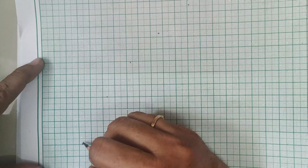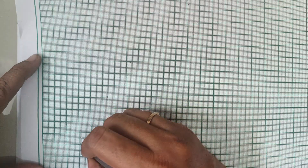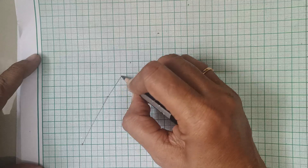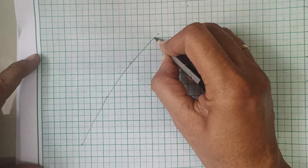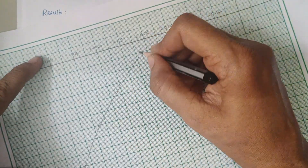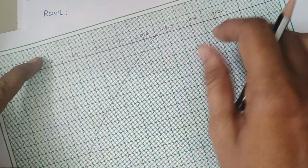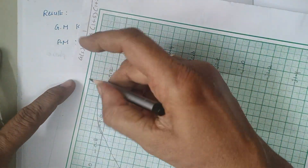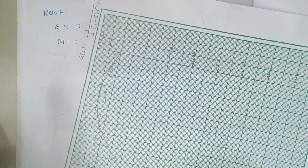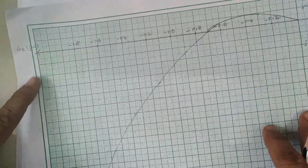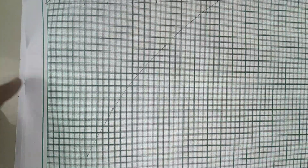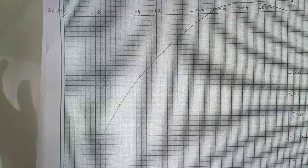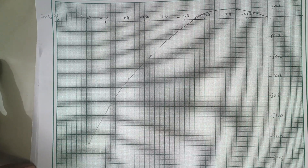Connect all the dots gradually with a freehand curve. This is our completed polar plot on the graph sheet.